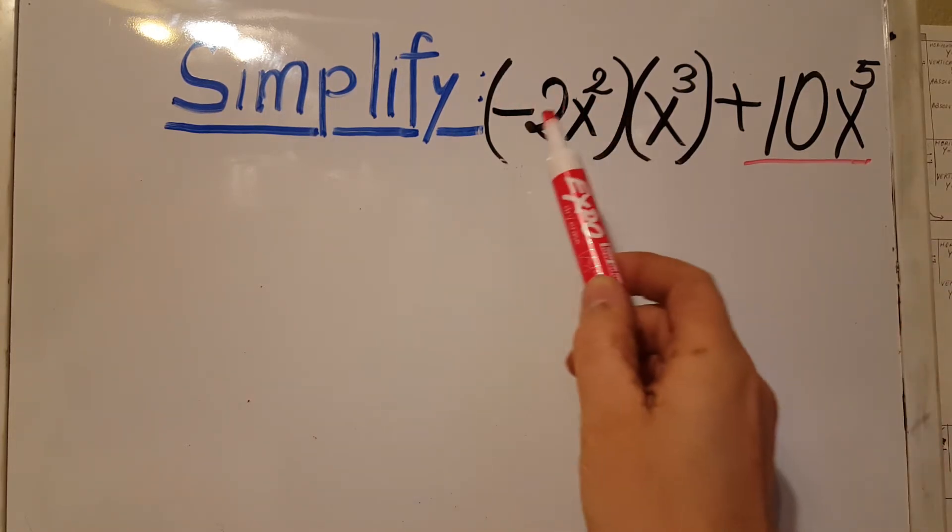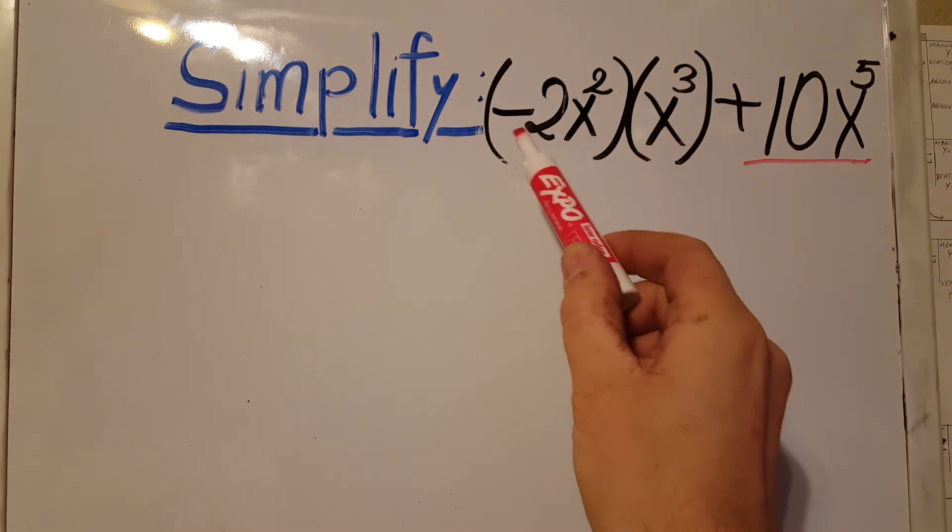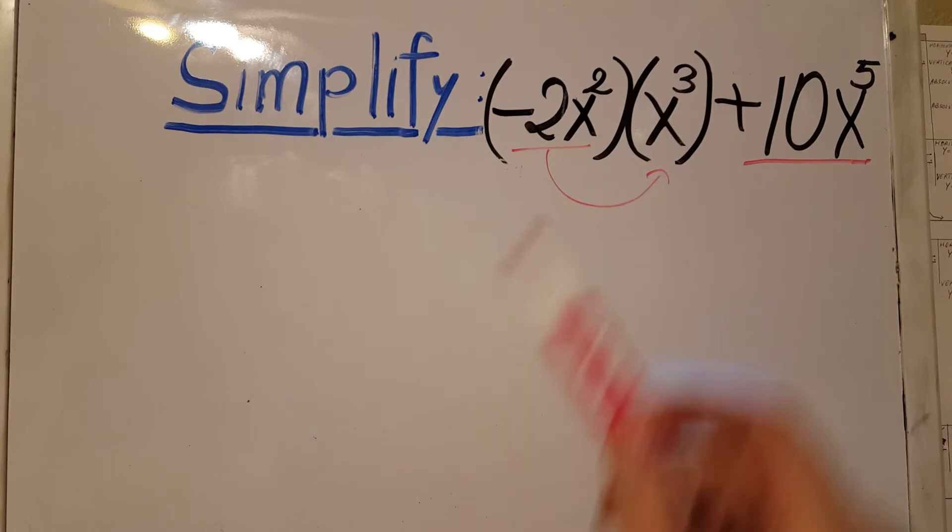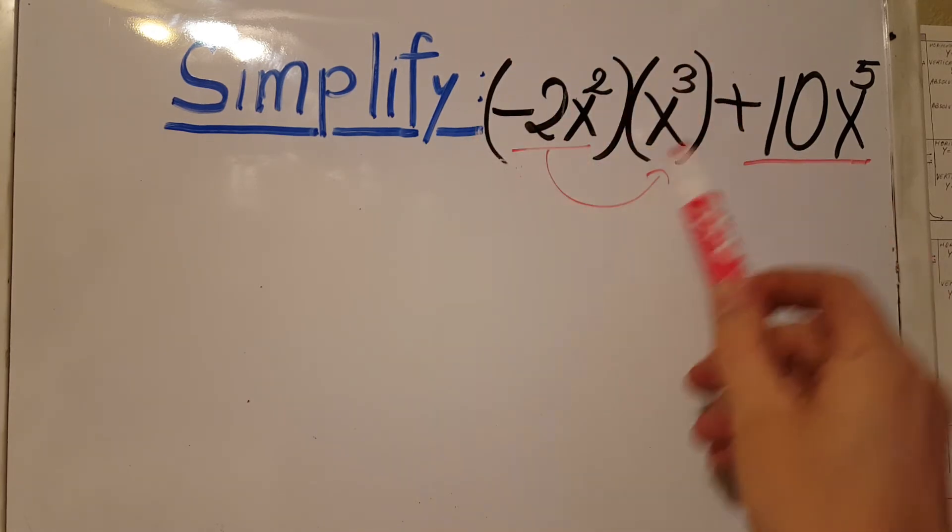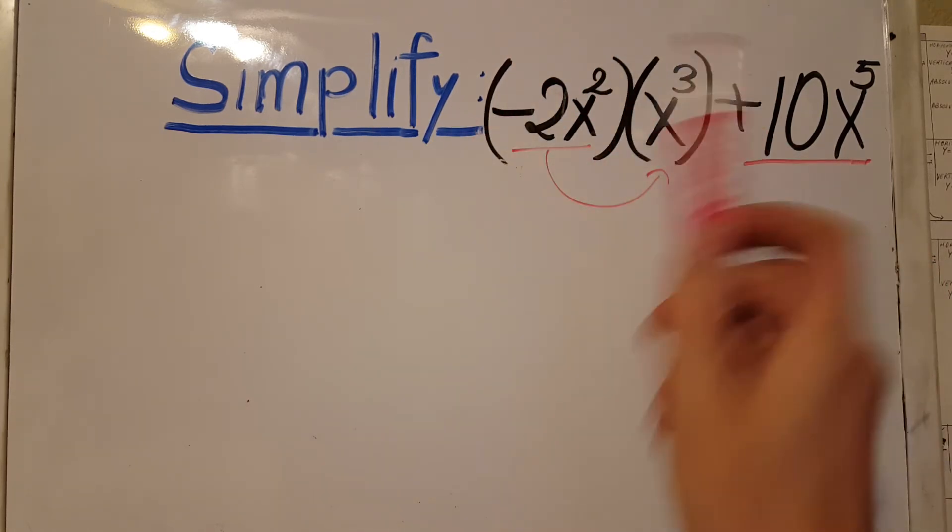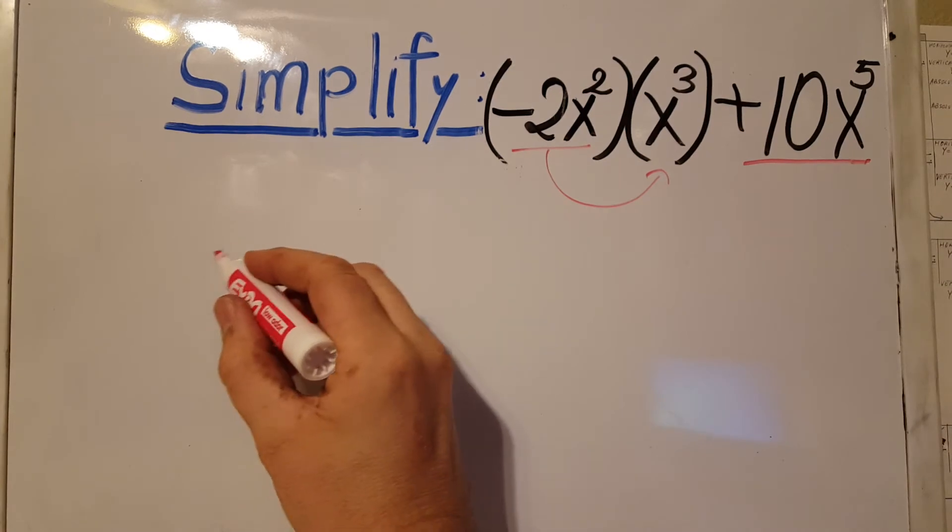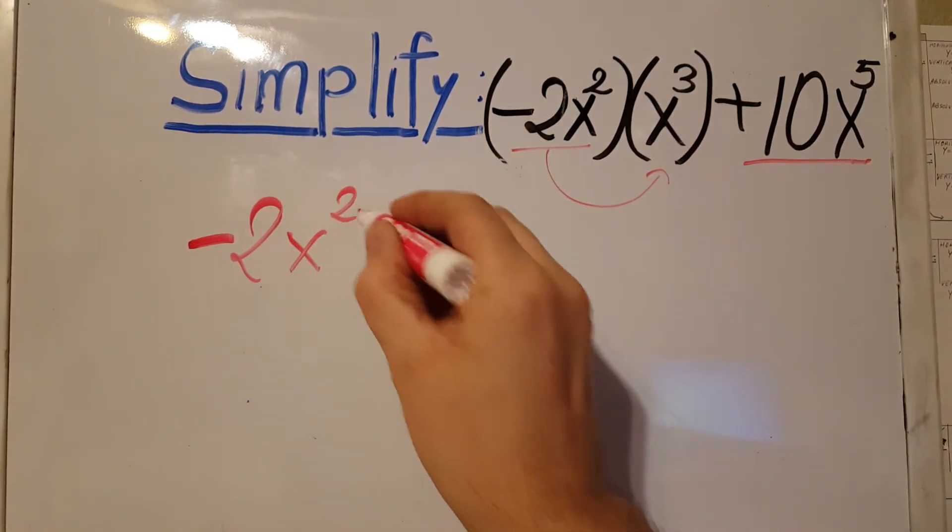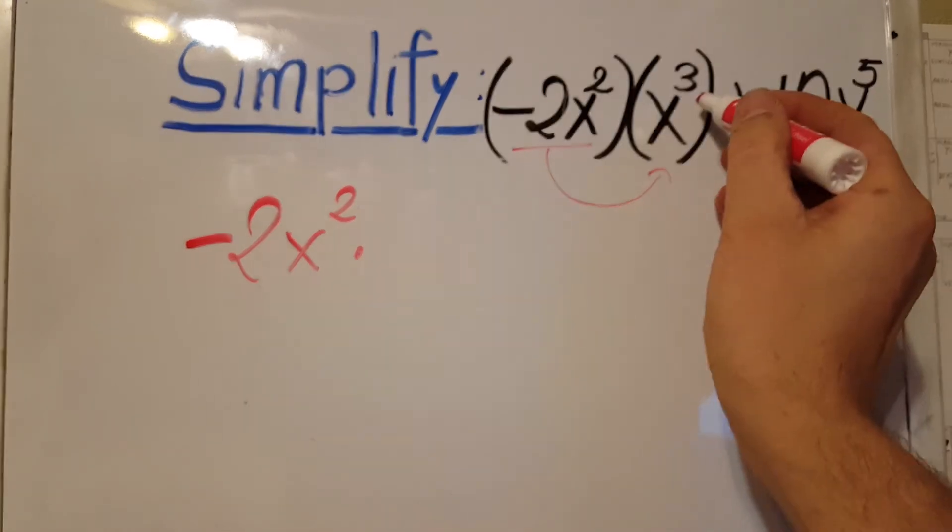Let's take a look over here. We can use the distributive property to distribute this into this. So let's rewrite this statement over here without the parentheses. So we're gonna have negative 2x to the square times x to the cube.